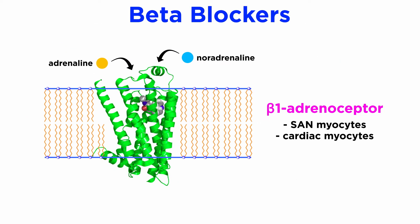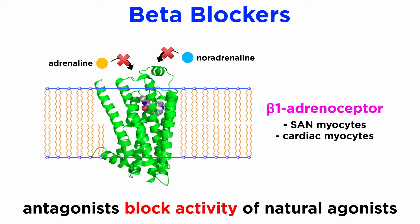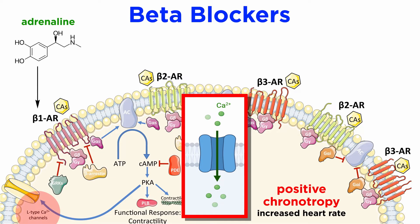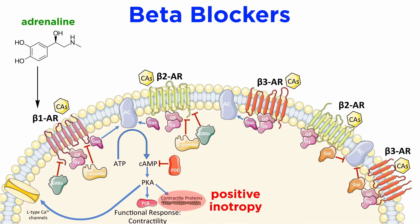Type 2 drugs are antagonists of the beta-adrenoceptors. The SAN and cardiac myocytes highly express the beta-1 adrenoceptor, and antagonists at this receptor block the sympathetic innervation mediated through adrenaline and noradrenaline. Normally, adrenaline and noradrenaline activate the beta-1 receptor and cause increased heart rate, or positive chronotropy, and contractile force, or positive inotropy. Activation of the beta-1 receptor leads to an increase in intracellular cAMP through Gs G-protein coupling.